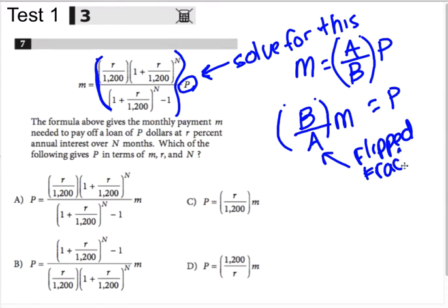So as ugly as this looks, what I'm really looking for is an answer that has the flipped version of that disgusting fraction. Well, this disgusting fraction has an R over 1,200 on the top and then the 1 plus R over that on the bottom, or on the top with it.